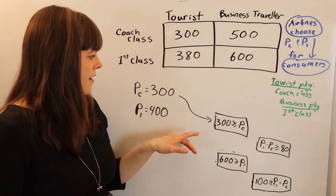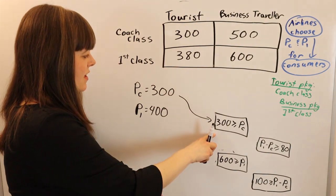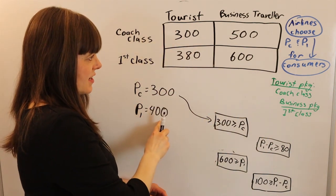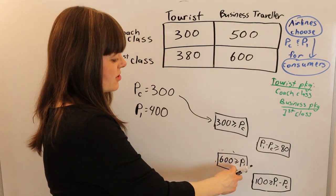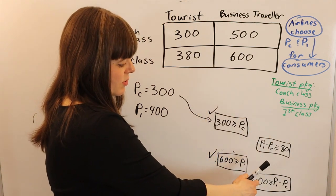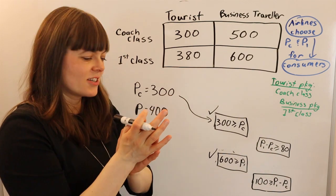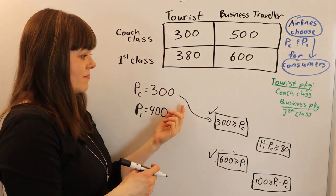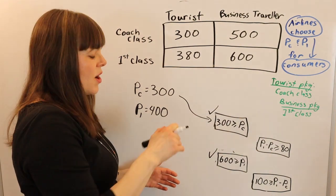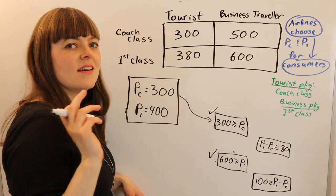With these prices, both participation constraints are met: the tourist pays $300, which they're willing to pay, and the first class ticket at $400 is below the $600 the business traveler is willing to pay. The price difference of $100 is within the $80–$100 range, properly sorting the two types of customers. The first class price is as high as it can be while still sorting customers correctly. So $300 for coach and $400 for first class are the prices set by the airline in this situation.